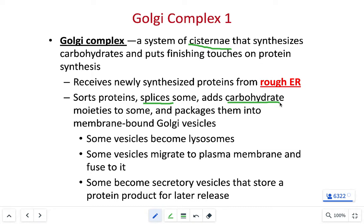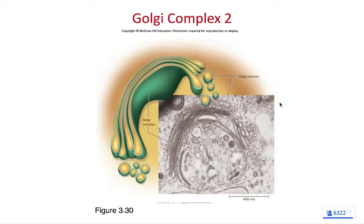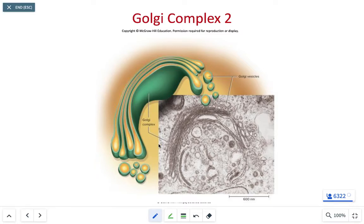After proteins are processed in the Golgi complex, some are put into a secretory vesicle and excreted from the cell. Other transport vesicles carry those proteins to the cell membrane, where the transport vesicle fuses with and becomes integrated into the cell membrane. In the electron micrograph, we can see lots of overlapping sacs representing the Golgi complex.